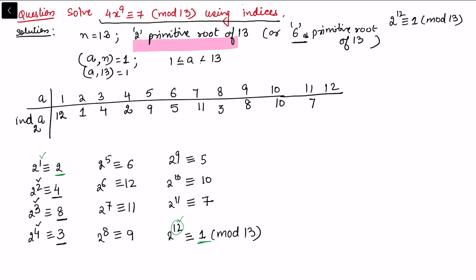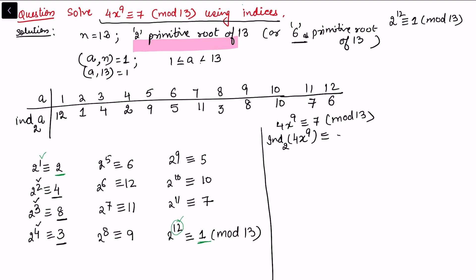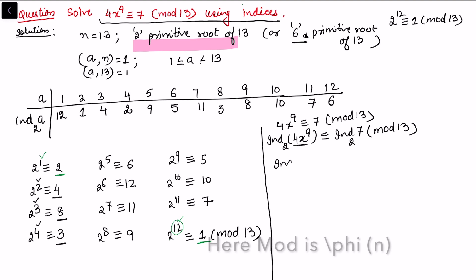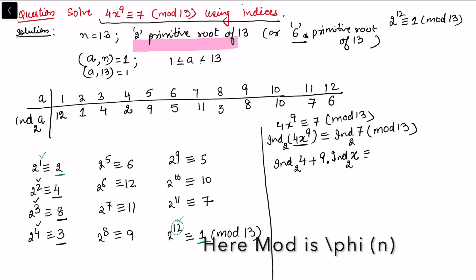Now I want to solve 4x to the power 9 congruent to 7 mod 13. Applying indices on both sides with respect to primitive root 2: index of (4 · x⁹) is congruent to index of 7 with respect to 2, mod 13. Separating the product using the index property gives index of 4 with respect to 2, plus 9 times index of x with respect to 2, congruent to index of 7 with respect to 2, mod 13.